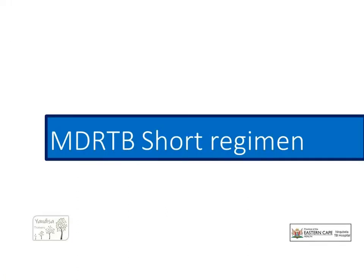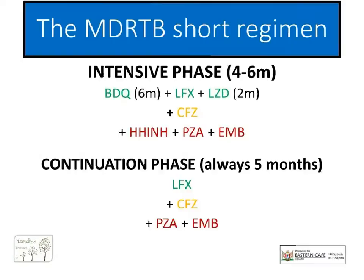Let us start with the MDR-TB short regimen. Remember, this is for our straightforward new patients — both adults and children from the age of six and up. At first it might seem quite overwhelming with seven drugs early on in treatment and different drugs stopped at different times. The continuation phase consists of four drugs, giving a total of a nine to eleven month regimen.